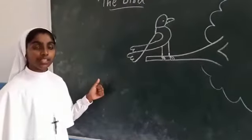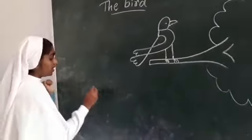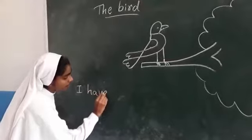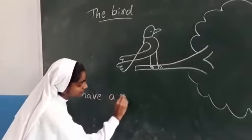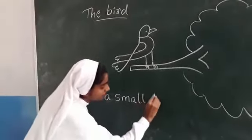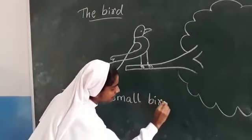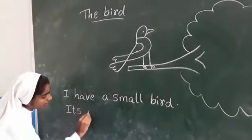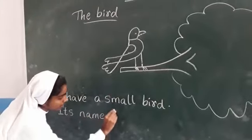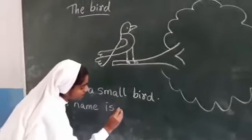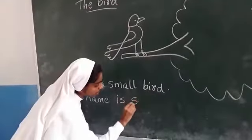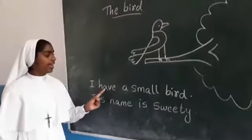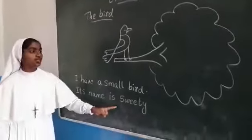Now you have to write: 'I have a small bird. Its name is...' — you can give any name you like. This one is going to be Sweetie. So write: 'I have a small bird, its name is Sweetie.'